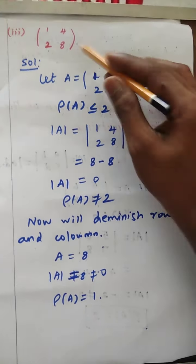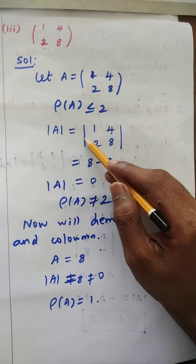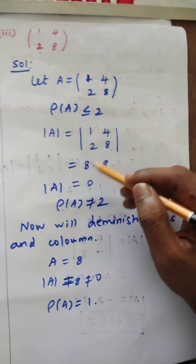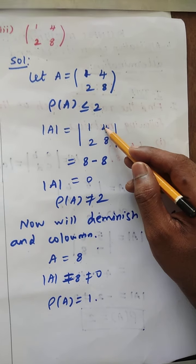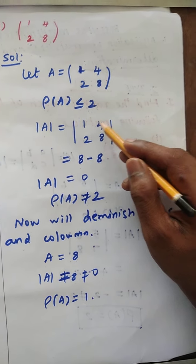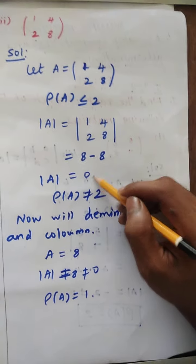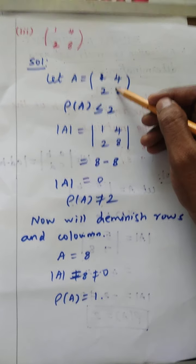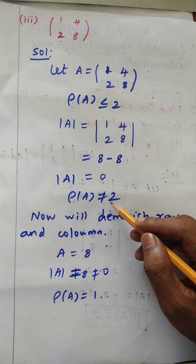So find the determinant. For matrix [1, 4; 2, 8]: first multiply the diagonal — 1 times 8 is 8. Then multiply the opposite diagonal — 2 times 4 is 8 — and change the sign. So 8 minus 8 equals 0. Determinant A equals 0, which means this is not a rank of 2. So rank of A is not equal to 2.